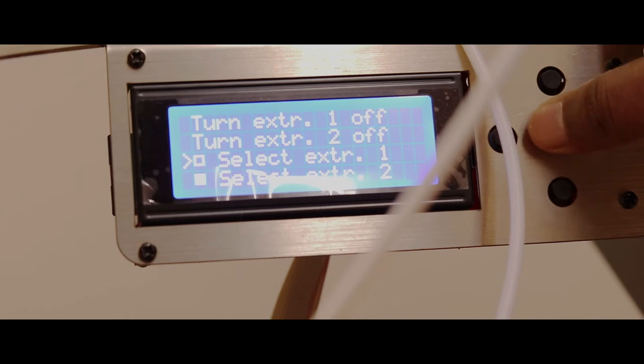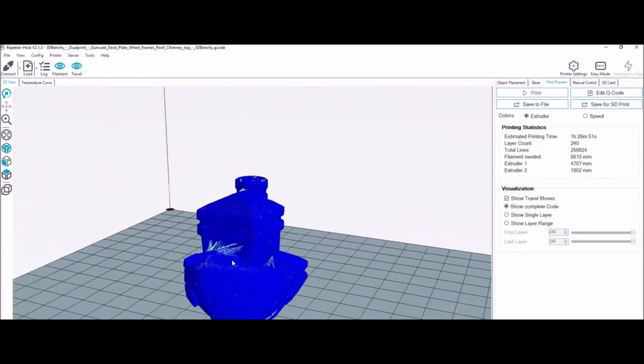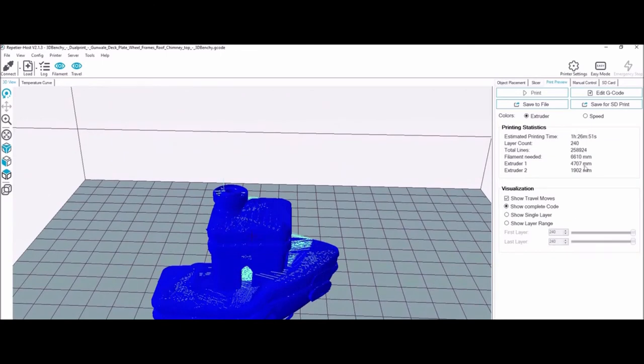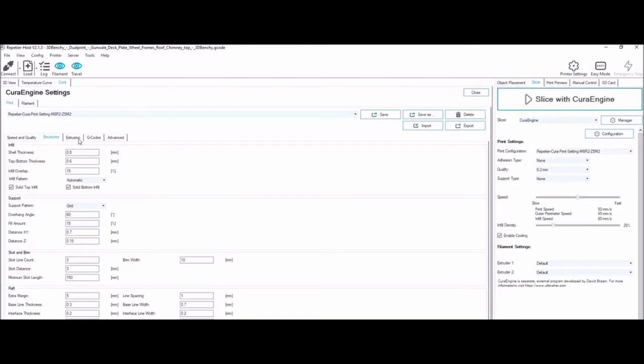I prefer the Repetier Host PC application and I use Cura Slicer. Repetier Host is a great software that can do real-time changes to the print without any hassle. All you need is a PC or laptop with you.